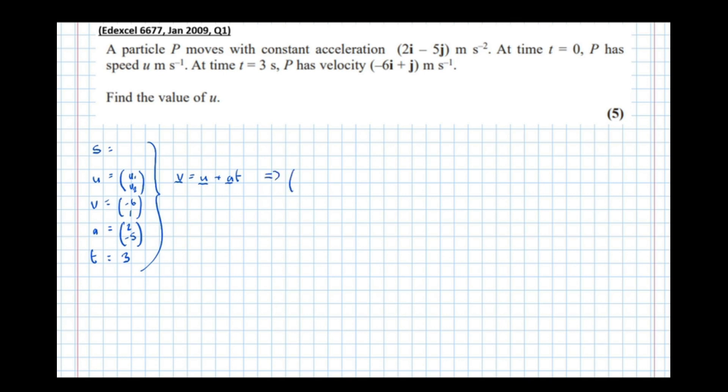So v = (-6, 1) equals u = (u₁, u₂) plus a = (2, -5) times t. Notice that t isn't a vector—that's because time occurs linearly, time exists on a straight line.